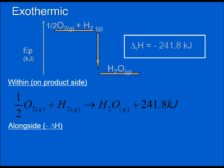So we would write the reaction: a half O2 plus H2 produces water vapor and 241.8 kilojoules of energy. Now, the negative did not disappear. The negative is represented by the fact that the 241.8 kilojoules is now on the product side of the equation.